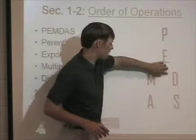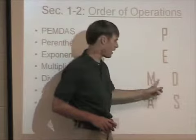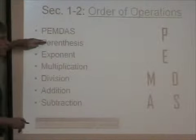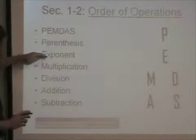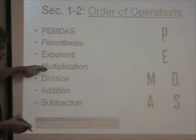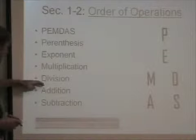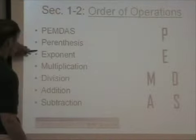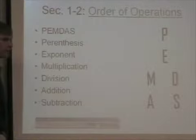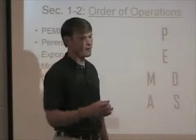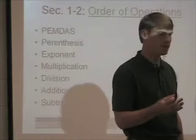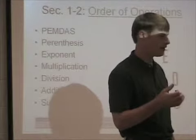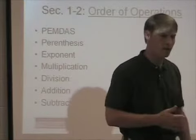It's called PEMDAS — P-E-M-D-A-S. 'Please Excuse My Dear Aunt Sally' might be how you learned it. The order goes: parentheses — you always do your parentheses first. Then your exponents. Then you multiply if there's any multiplication, then you divide if there's any division, then you add if there's any addition, and then you subtract if there's any subtraction. The only reason for saying 'Please Excuse My Dear Aunt Sally' is so you'll remember: P means parentheses, E means exponents, M-D-A-S. If you go in that order, you'll never miss a problem.